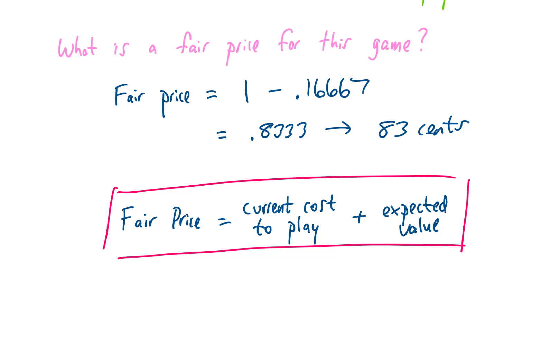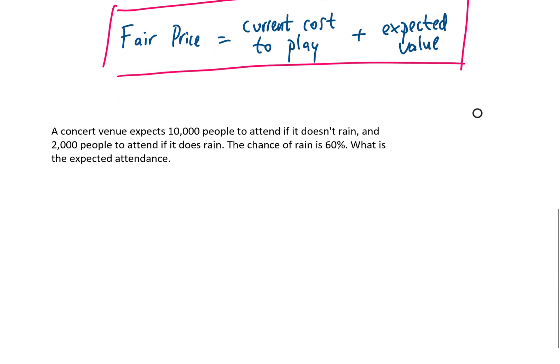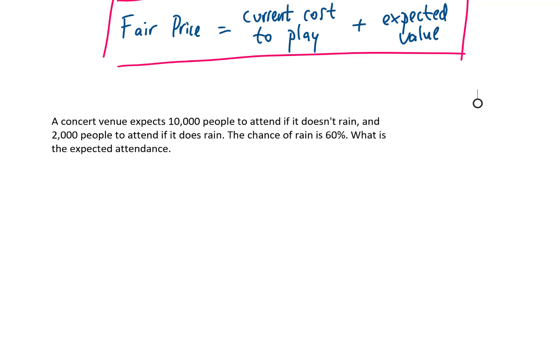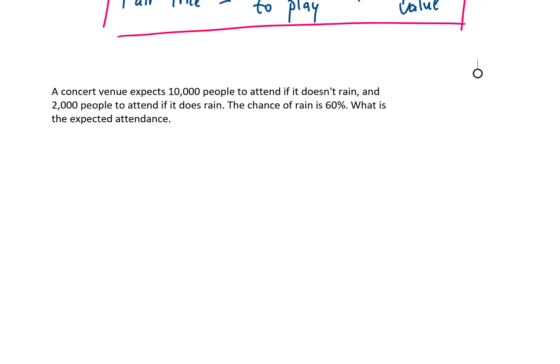Okay, let's do a couple more examples. Here's an example. A concert venue expects 10,000 people to attend if it doesn't rain, and 2,000 people to attend if it does rain. The chance of rain is 60%. What is the expected attendance?